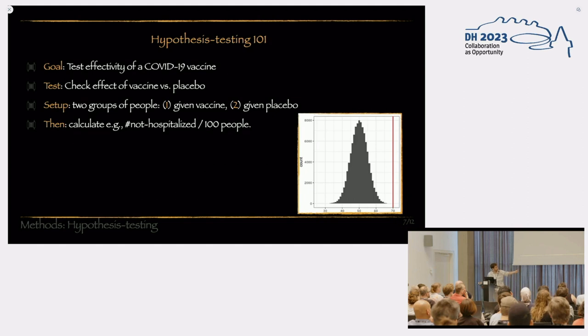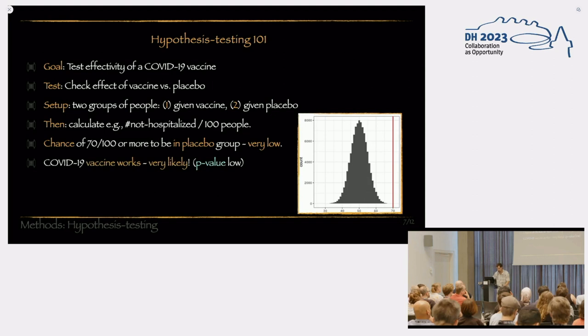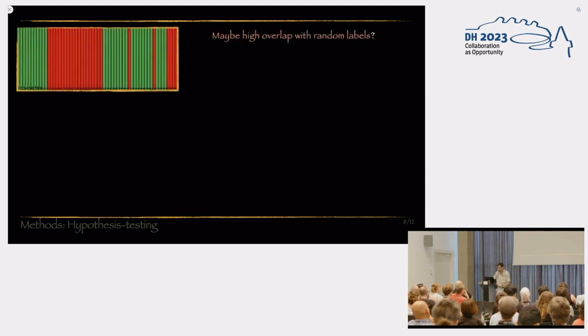From this distribution, this is referred to as the null distribution, we can calculate the probability that the people who did get the vaccine come from the distribution of the people who didn't get the vaccine. In this case, as you can see, the chances are very low. This is really far removed from this distribution. And essentially, it means that the COVID vaccine works with a very high probability. This means that it has a very low p-value. Unfortunately, I don't have the time to explain what a low p-value is.